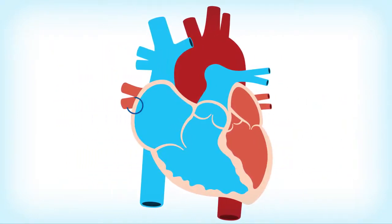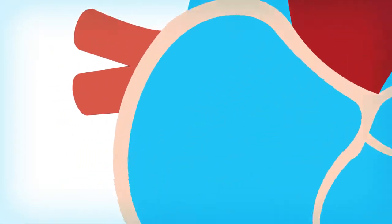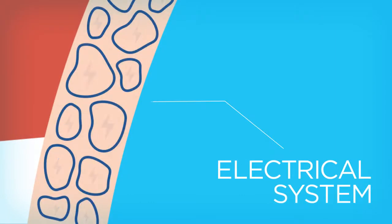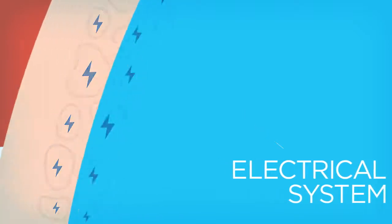A network of specialized muscle cells within the heart wall, called the electrical system, controls the rate and rhythm of the heartbeat, and causes your heart to contract and pump blood.